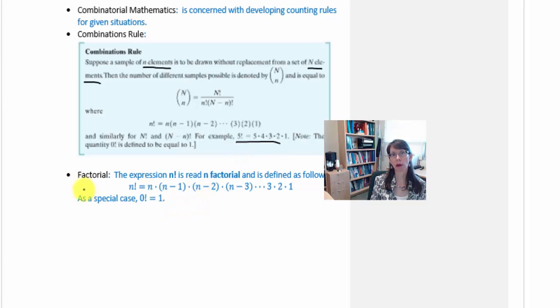One important fact to remember about factorial is that we do have a special case. 0 factorial is equal to 1. So don't forget that when you're simplifying problems.